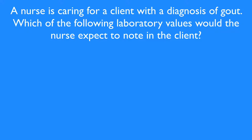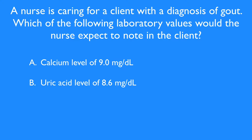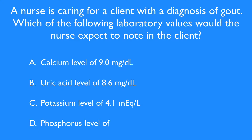Our question reads: a nurse is caring for a client with a diagnosis of gout. Which of the following laboratory values would the nurse expect to note in the client? Option A: calcium levels of 9.0 milligrams per deciliter. Option B: uric acid level of 8.6 milligrams per deciliter. Option C: potassium level of 4.1 milliequivalents per liter. Option D: phosphorus level of 3.1 milligrams per deciliter.